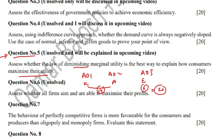First identify that utility is the main topic being tested. Define what utility is — you can start with a catchy sentence such as: 'The law of diminishing marginal utility is an interesting law in microeconomics that explains the behavior of consumers.' Utility refers to the satisfaction obtained by using a certain product or service. Marginal utility is the additional utility obtained by consuming one additional unit, with the formula: MU = change in total utility divided by change in quantity consumed.